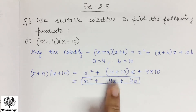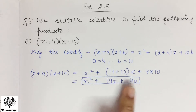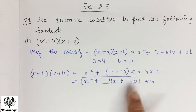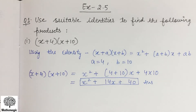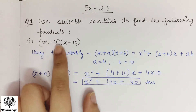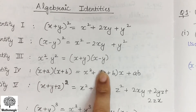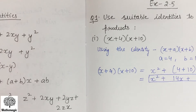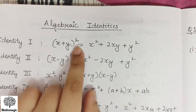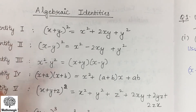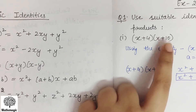Note that x² and x cannot be combined since they are different terms — a variable squared and a variable. This is the required product for the first part. Regarding how to choose identities: the first part is written as (x+4)(x+10), which matches the form (x+a)(x+b), so that identity is used. For example, if we had (x+10)², we would use a different identity. You have to judge which identity to use in which part.